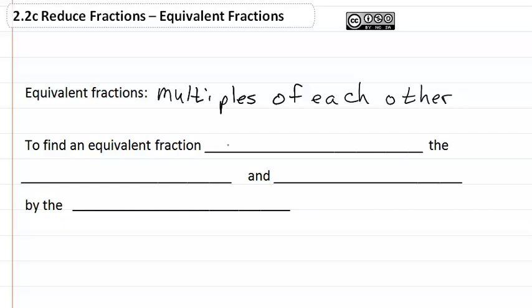To find an equivalent fraction, we multiply the numerator and denominator by the same number.